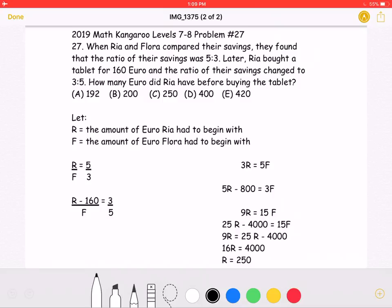Let's start by setting R equal to the amount of euro Rhea had to begin with, and F equal to the amount of euro Flora had to begin with. As it says in the problem,